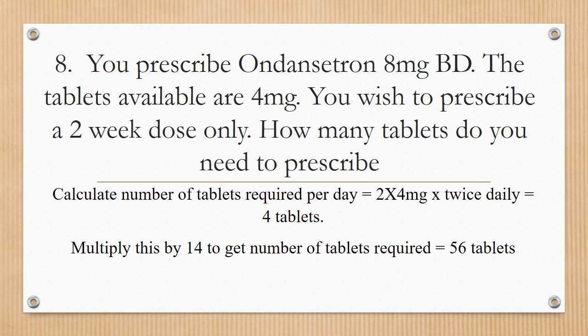You need to prescribe ondansetron 8 milligrams BD. Tablets are available in 4 milligrams and you need a two-week supply. Calculate tablets per dose: 8 mg ÷ 4 mg = 2 tablets per dose. BD means two doses per day, so 2 × 2 = 4 tablets per day. Over 14 days: 4 × 14 = 56 tablets total.